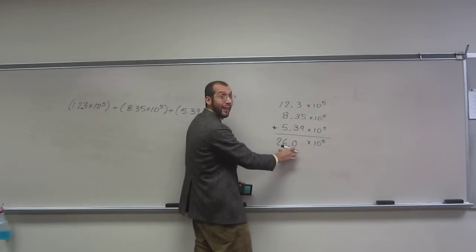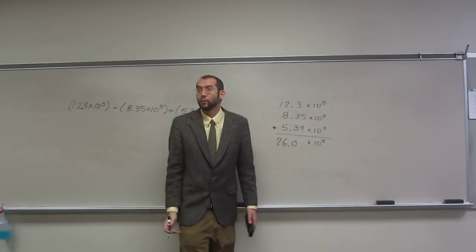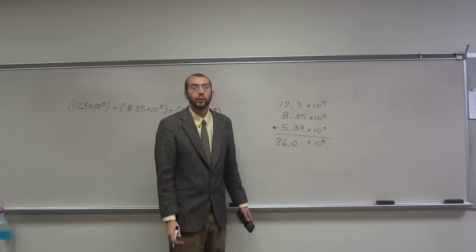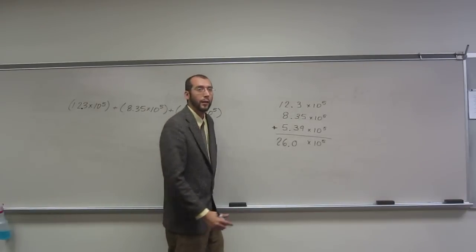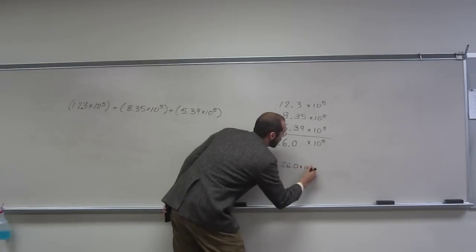So, the 3 in this doesn't really have to do with these each having 3 significant figures, that the answer has 3 significant figures. Does that make sense? So the answer effectively would be 26.0 times 10 to the 5th.